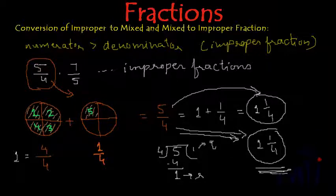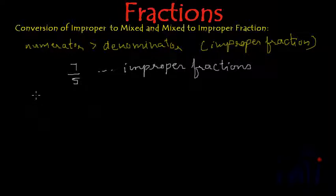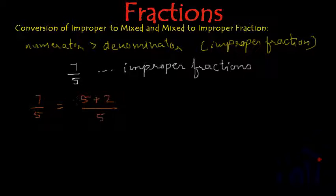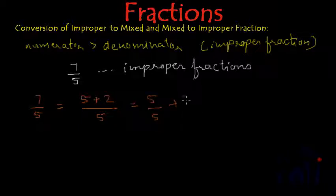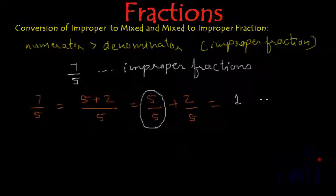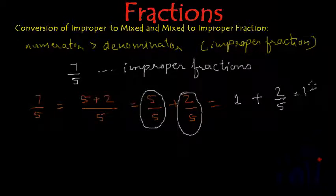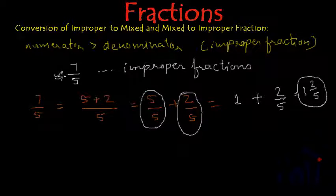Let's take another example: 7/5 is an improper fraction. It can be written as (5 + 2)/5, which equals 5/5 + 2/5. Since 5/5 represents 1 whole, this becomes 1 + 2/5, or the mixed fraction 1 2/5. Let's verify we get the same result using the division method.